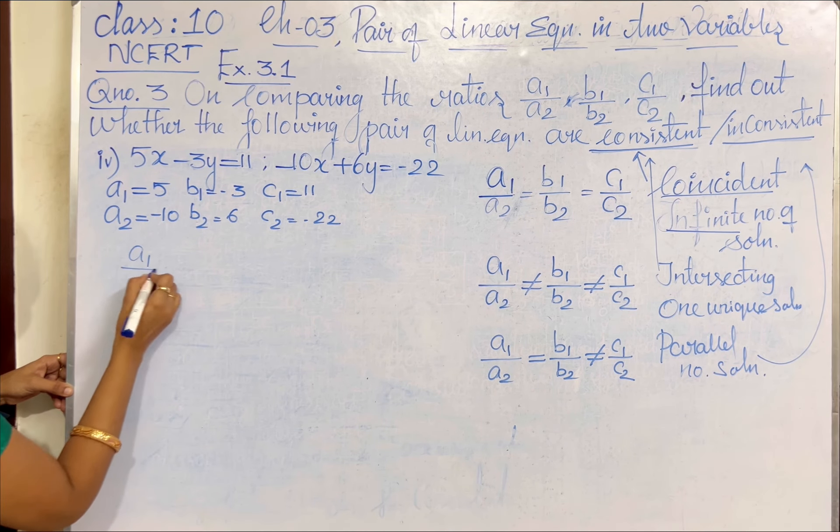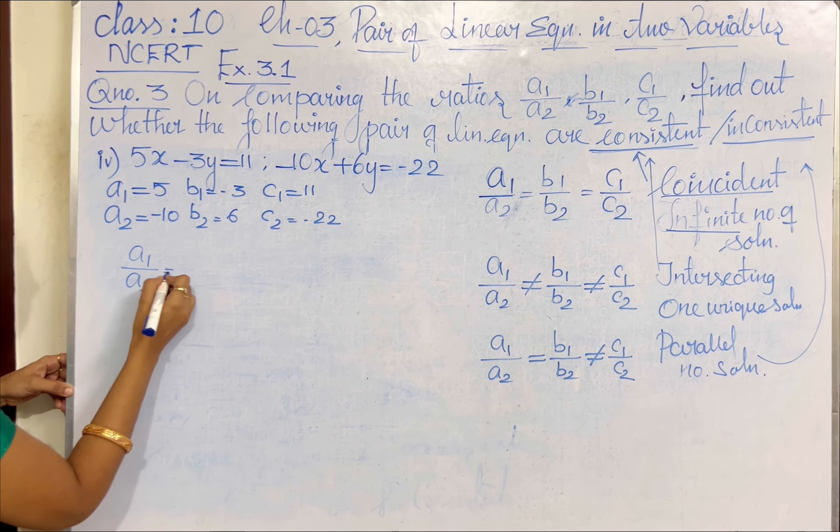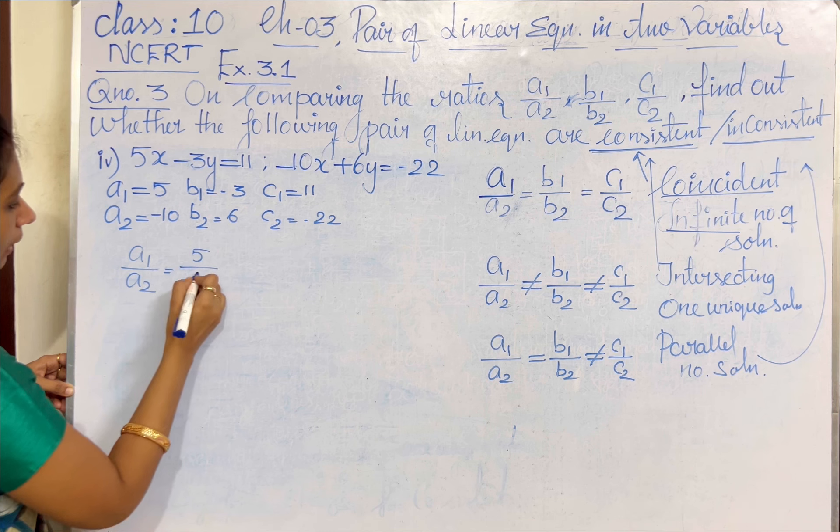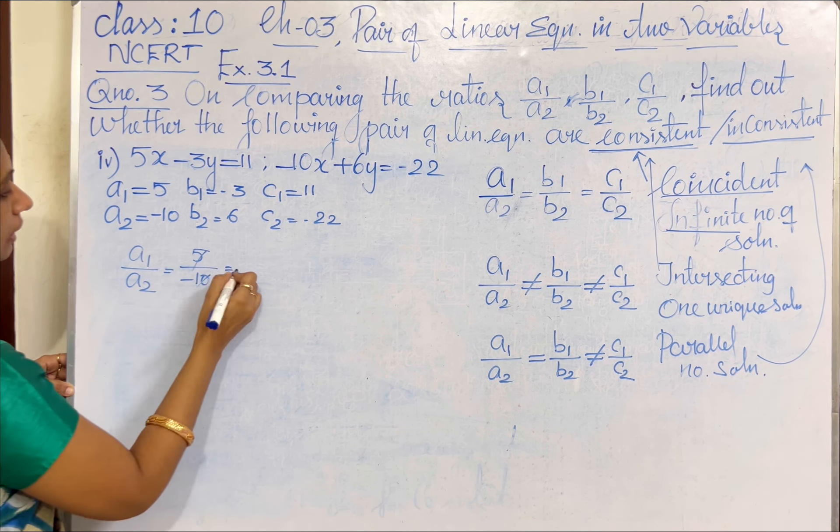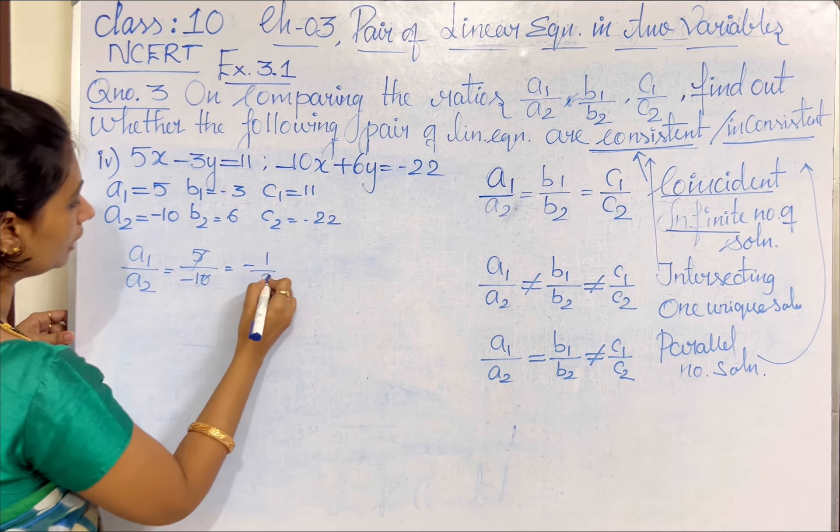So, let me find the ratio. What is A1 by A2? A1 by A2 is 5 divided by minus 10. So, both are multiples of 5, giving minus 1 by 2.